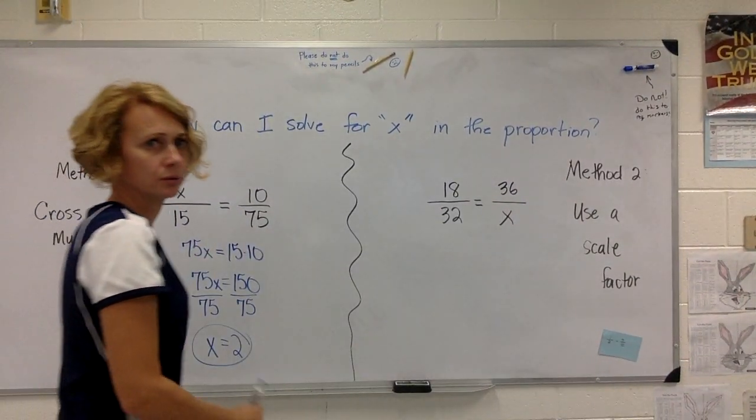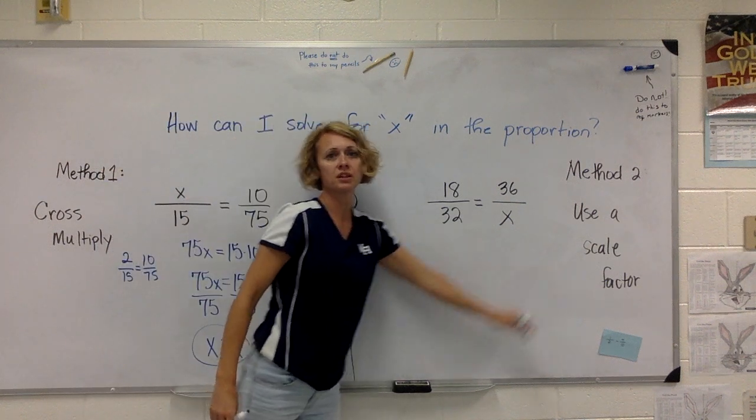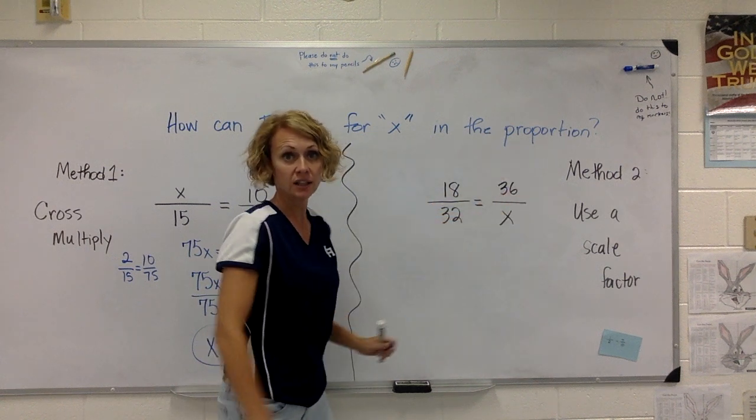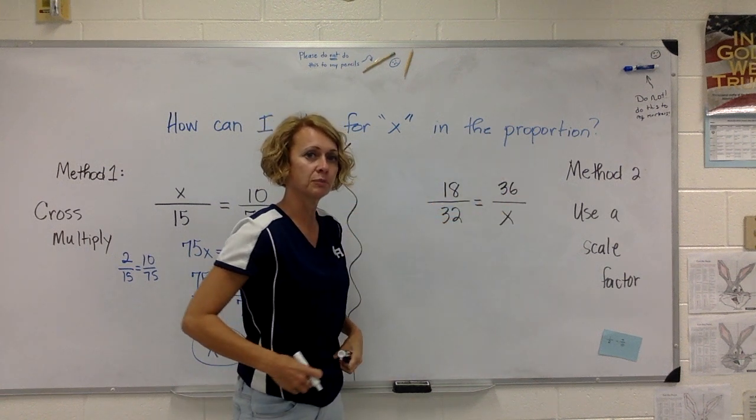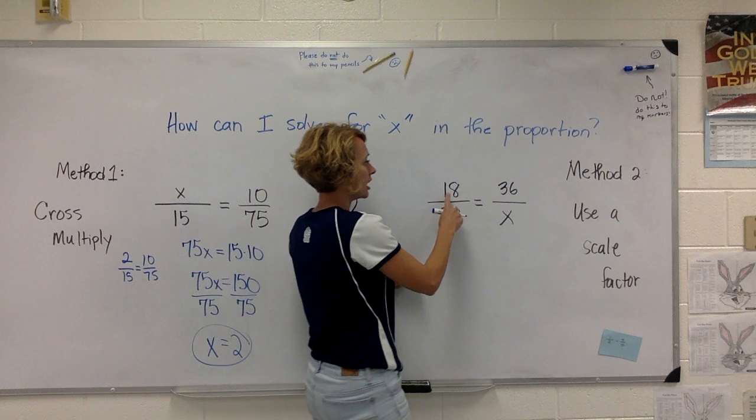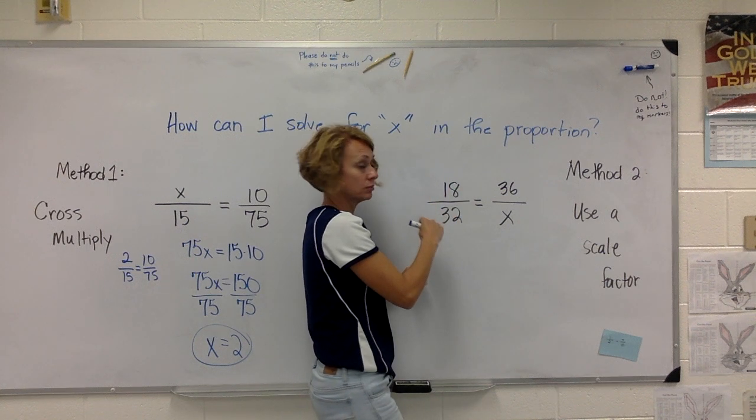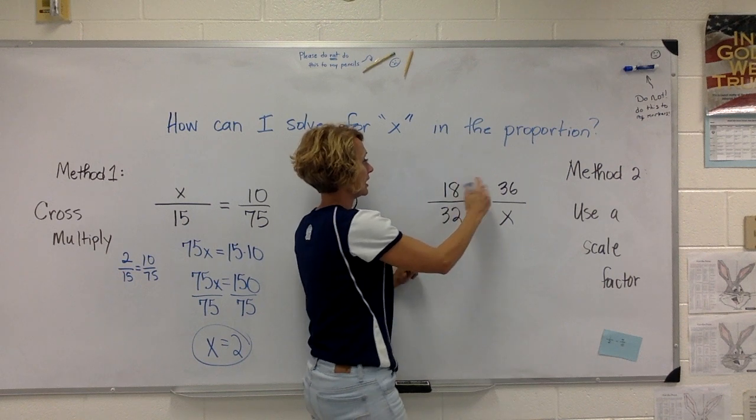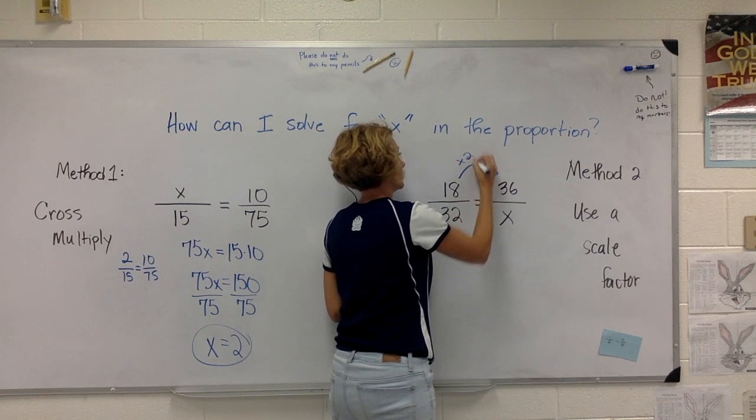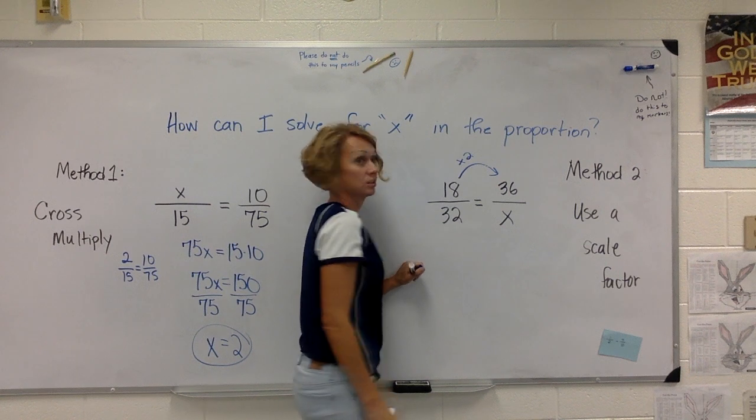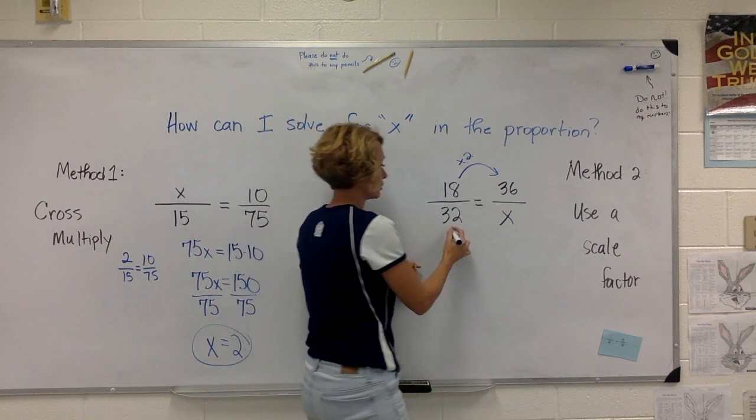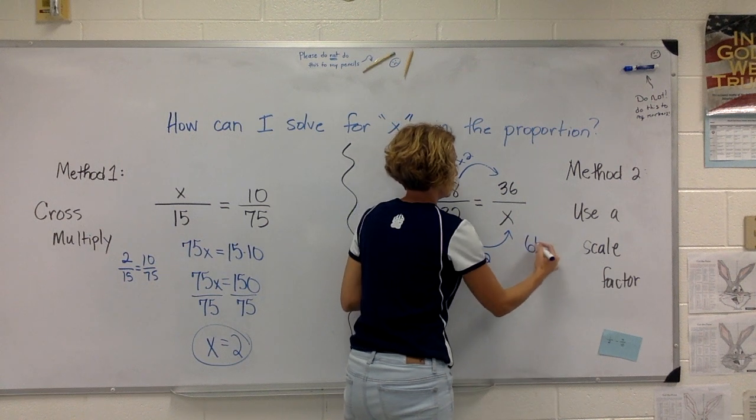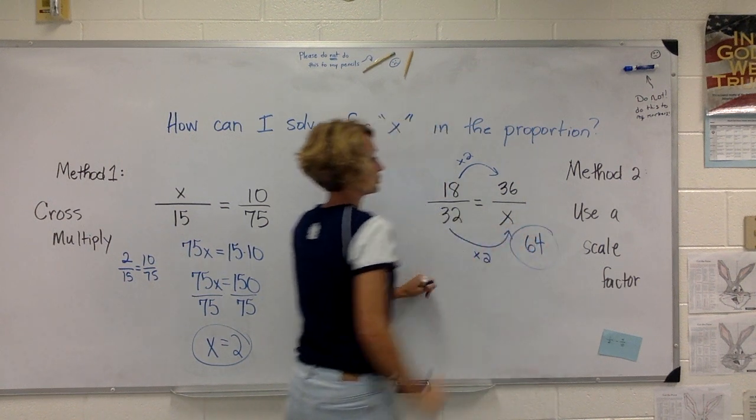What about method 2? Method 2 says you can use a scale factor. If you see a proportion and you're solving for an x value and you notice that there's a comparison of some constant between two of your numbers, for example from numerator to numerator I know that 18 times 2 gives me 36, so I can just multiply the denominator by that same scale factor times 2 and get that my x value should be 64.